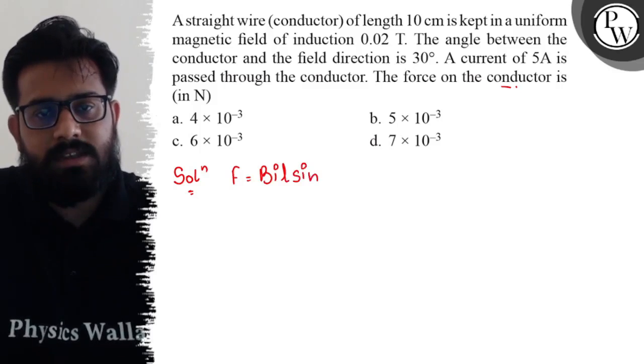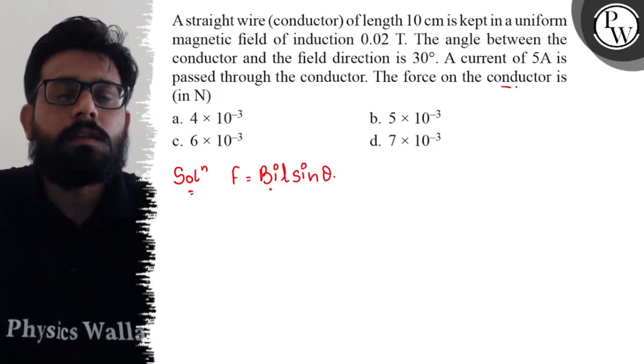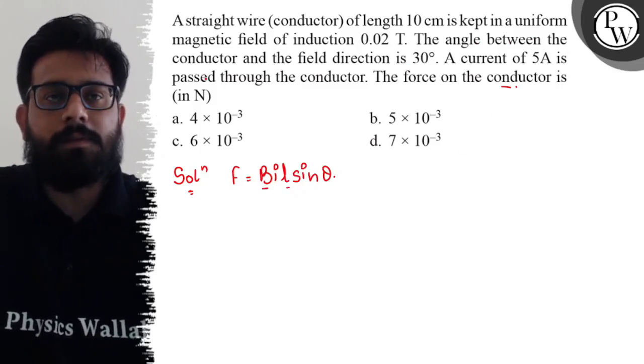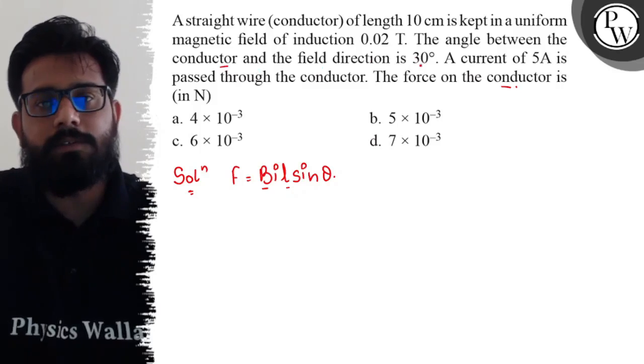Where theta is the angle between the magnetic field and the length of the conductor. So here the angle between the conductor length and the field is 30 degrees, so we have the value of theta as 30 degrees.